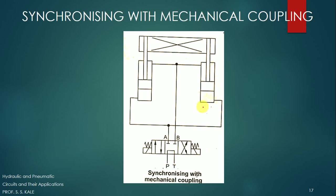Here we have piston-cylinder arrangement number one and piston-cylinder arrangement number two. The pistons of both cylinders are connected to each other using a mechanical coupling, and together they move this coupling in the upward direction. Port A is connected to the head end of both cylinders, and port B is connected to the rod end of both cylinders. Both rods are connected to one common coupling.